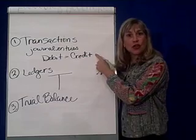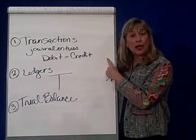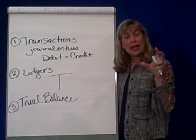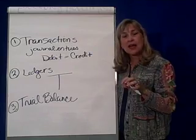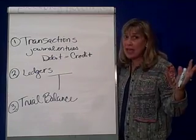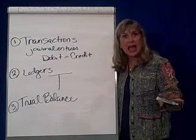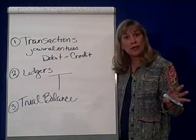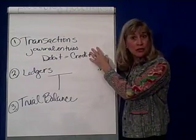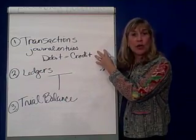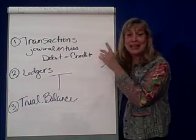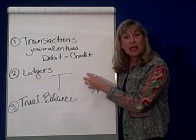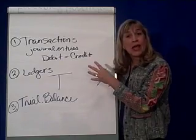Once we have these journal entries or transactions, that's one nice way to view information or data. But we also would like to view it by groups — in other words, everything that happened to cash, we'd like to be able to go to a cash account and look at all the give-gets on cash that period. Likewise with supplies. Same data, but we're going to slice and dice it into ledgers. Ledgers basically give us accounts.